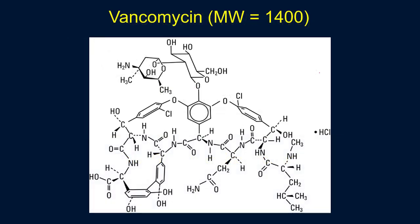What about vancomycin? Now we're dealing with a large molecule — it's a huge molecule at 1400 Daltons, which is about two times the size limit we just talked about. It's polar, but that doesn't matter because it's too big to go through the porin. So vancomycin would not go inside gram-negative bacteria. That's why vancomycin is not useful for treating gram-negative infections — it simply can't get inside.